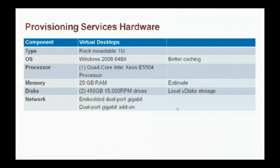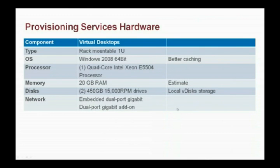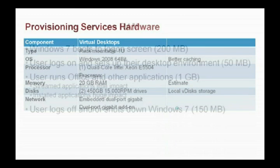The hardware we selected was designed for the provisioning services aspect. The operating system is Windows 2008 64-bit — the key point being 64-bit, because 64-bit gives much better caching, which helps our environment considerably. We're estimating about 20 gigs of RAM for the provisioning services server and then two 450-gigabyte drives. We wanted sizable local storage for the VDiscs instead of shared storage — since we're in a school district without a lot of money, we want to keep costs as low as possible.